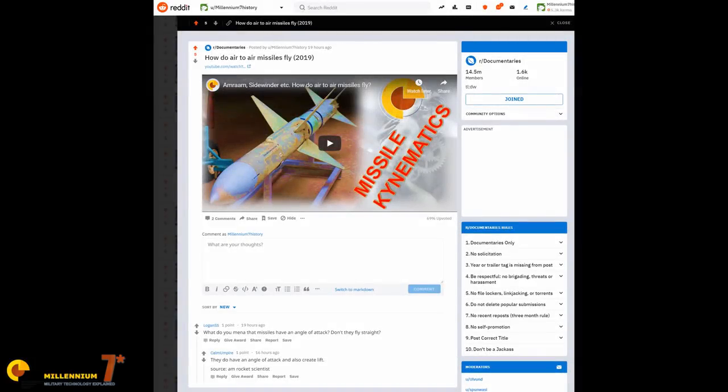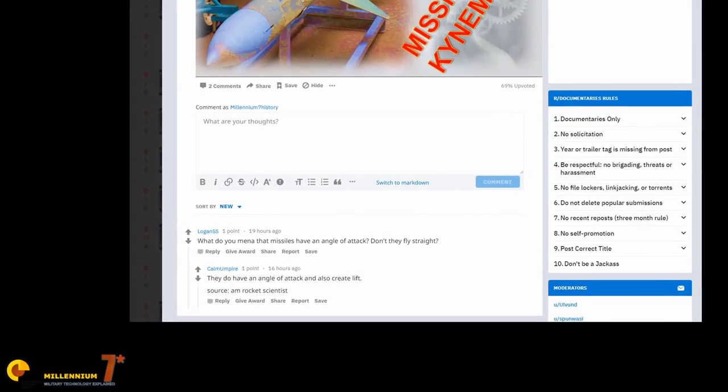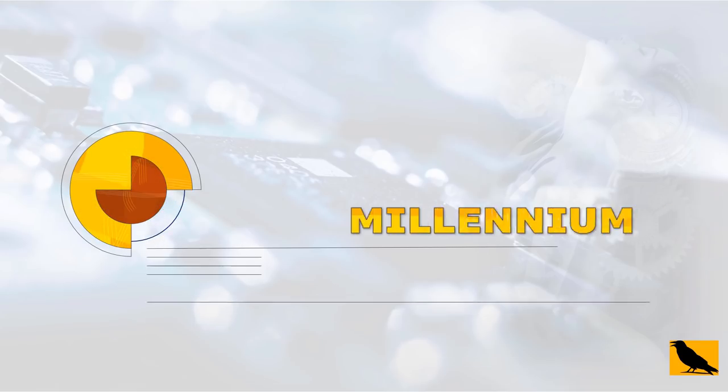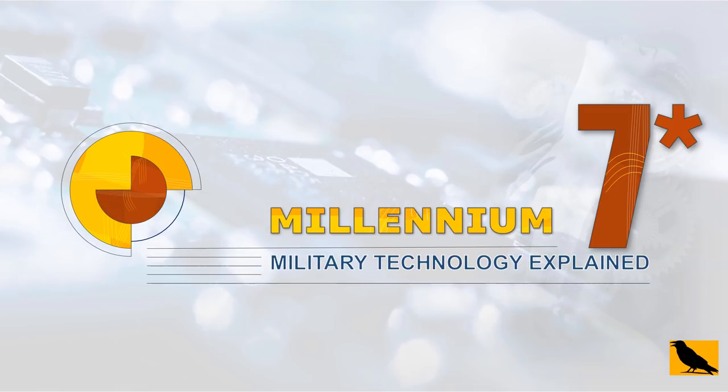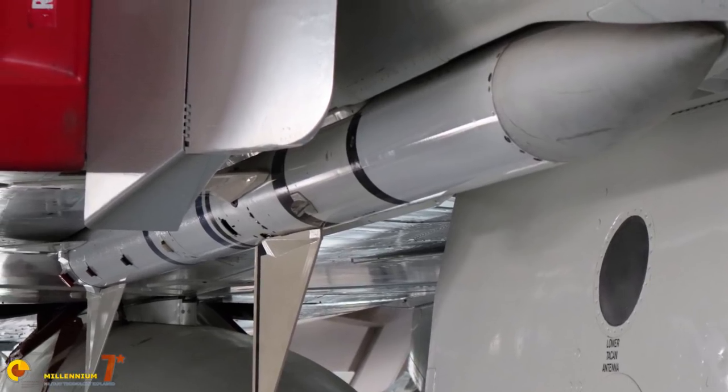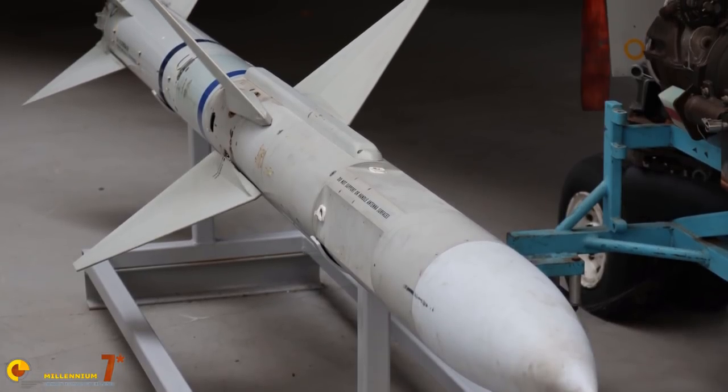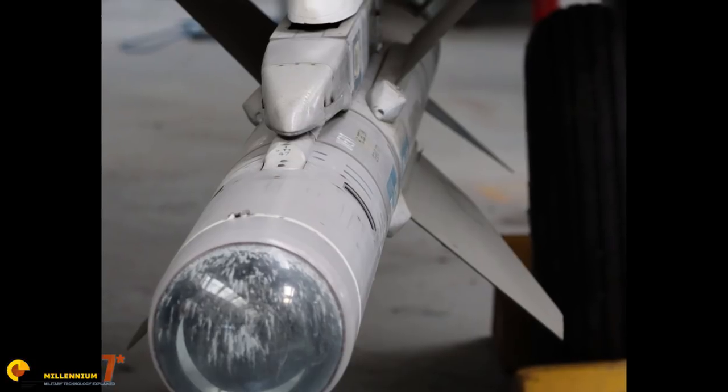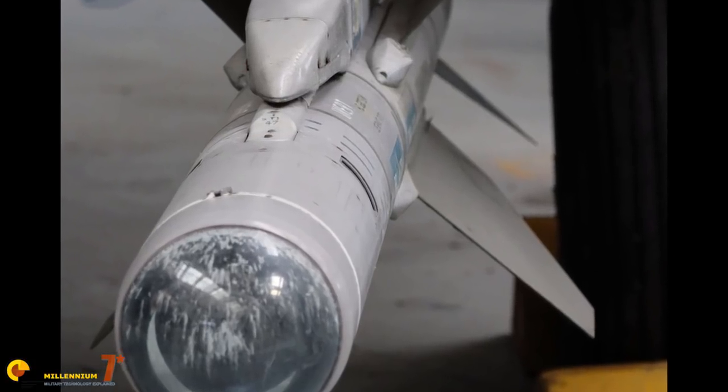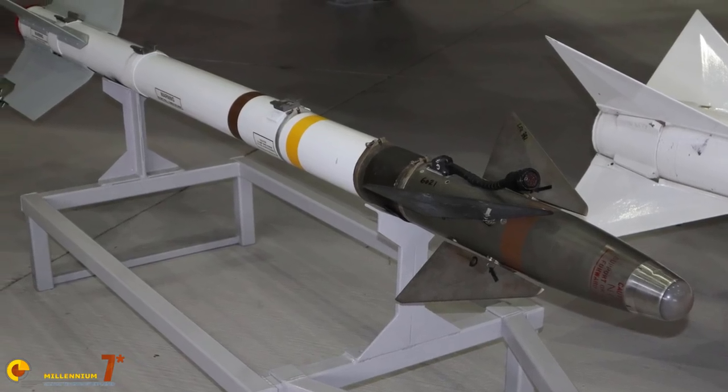We're explaining why air-to-air missiles fly nose-up and we're doing it right now. Welcome to Millennium 7 Star, the channel that helps you make sense of military history and military technology. This is a short video and a companion of our previous video on how air-to-air missiles fly.